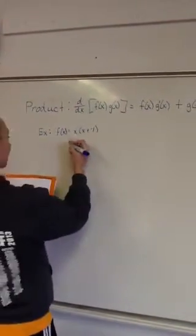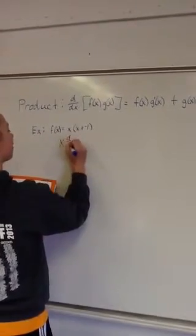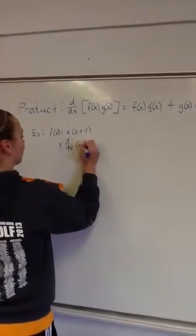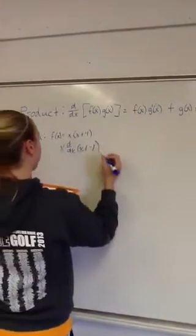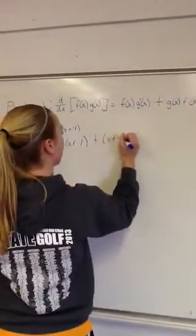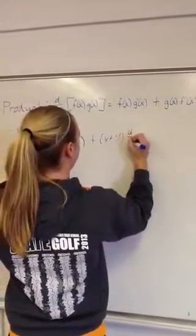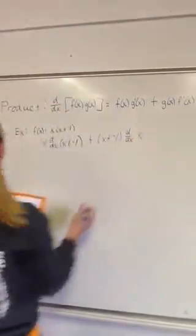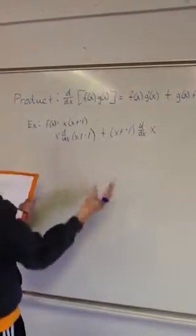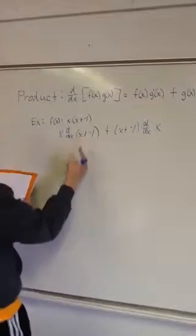So here is an example of x times x plus negative 1. So you would take the first times the derivative of the second, plus the second times the derivative of the first. And you go through your steps of simplifying the derivative of this.